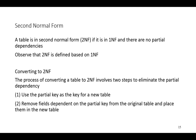As we go to second normal form, we'll talk more about this partial dependency. A table is said to be in second normal form if it satisfies the requirement of being in first normal form, plus no partial dependencies exist. Notice with Codd's definition, second normal form is defined based on first normal form.